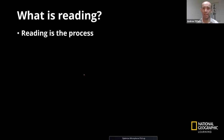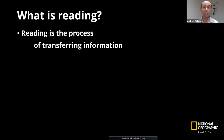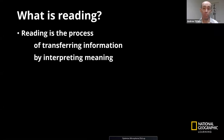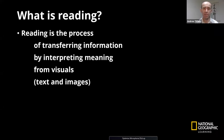So what is reading? Reading is a process — it is something we do, it takes a bit of time. It's the process of transferring information: someone has written and now you are reading. The information is an input for you, but when we are reading, we have to interpret the meaning. It's not an automatic thing — it is a cognitive skill to be able to interpret what's there, and we're doing that from visuals because reading is a skill where we use our eyes. We don't just use text. In the past we might have used text almost solely, but in today's world we're using a lot of text but also a lot of images in different forms.